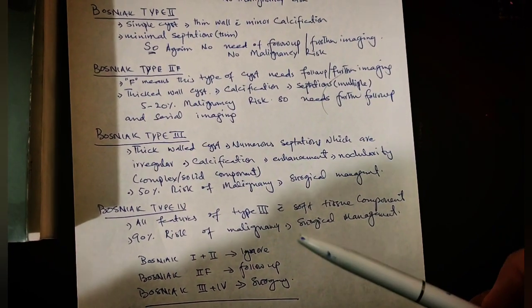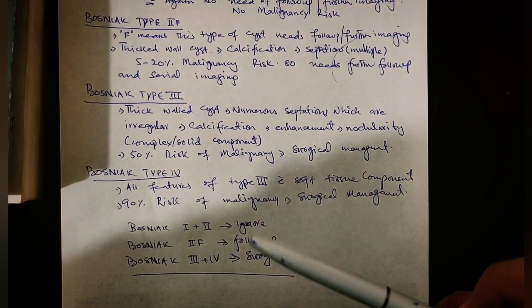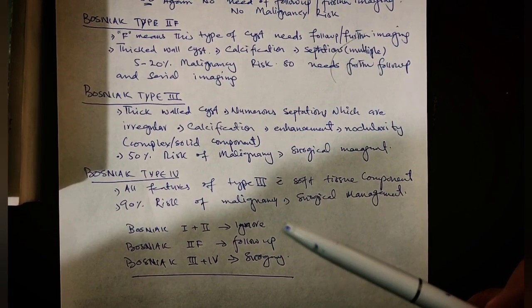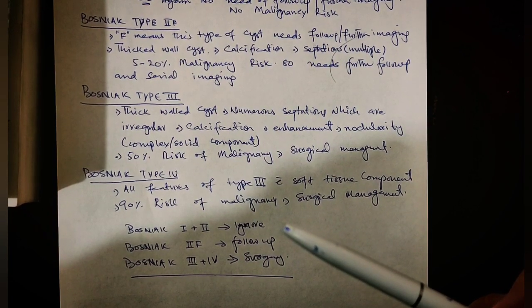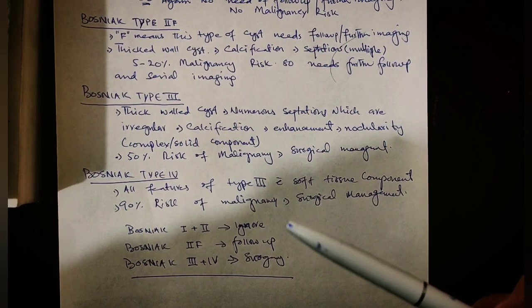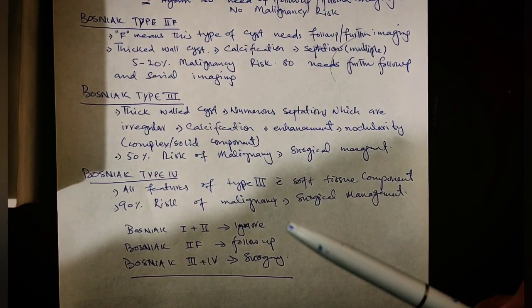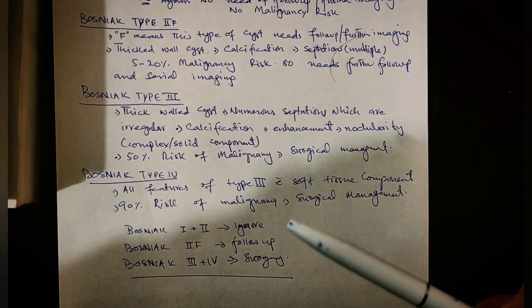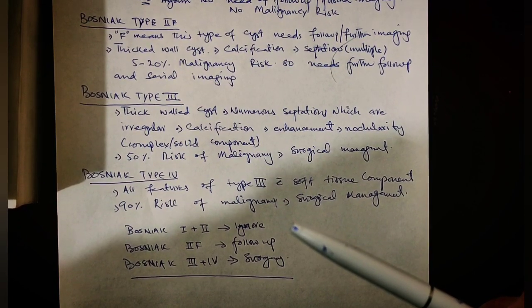In order to simplify Bosniak classification, Bosniak Type I and Type II renal cyst, if you come across such a type of renal cyst, you can ignore them and there is no need of any further follow-up or imaging. All you need is just to counsel the patients that this is a very benign thing.